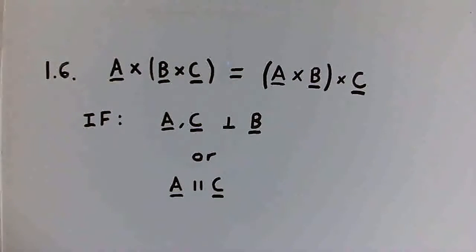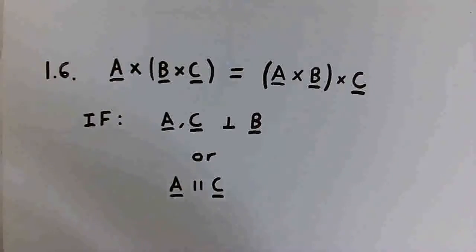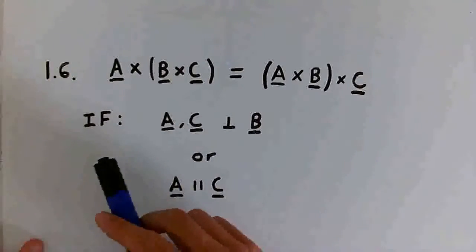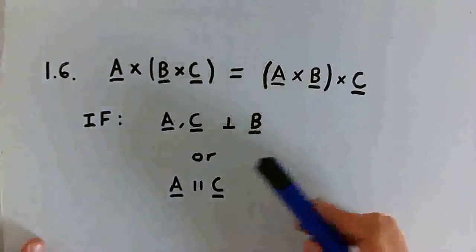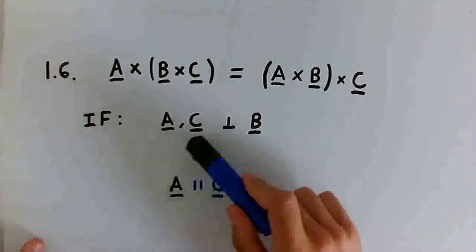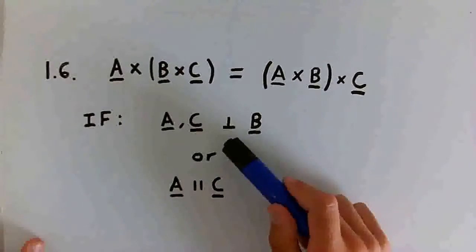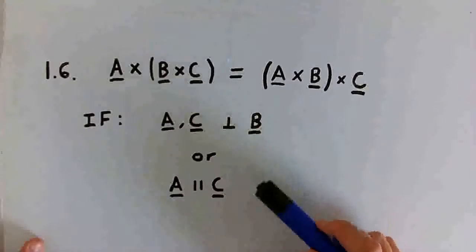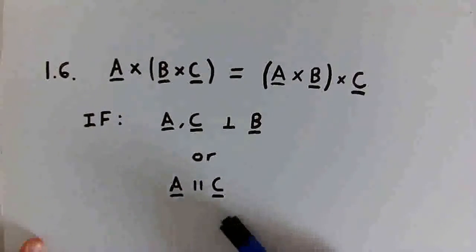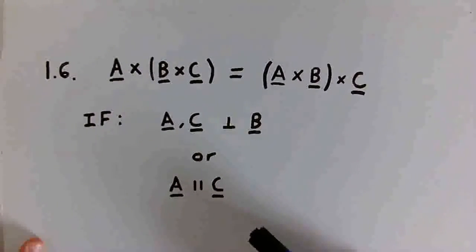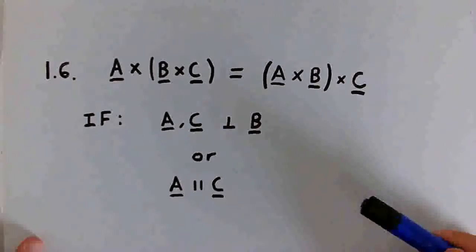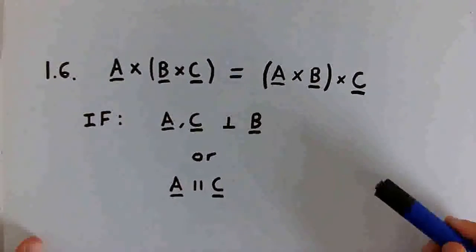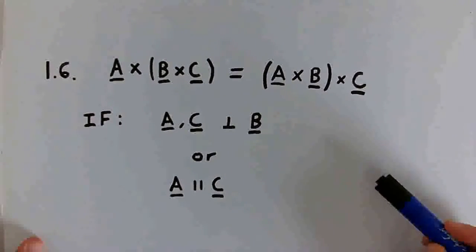We've now finished both parts of problem 1.6 and found the conditions under which A cross (B cross C) equals (A cross B) cross C. Those conditions are: if both vectors A and C are perpendicular to B, or if vectors A and C are parallel to each other. Thanks for watching the video, and subscribe if you want to watch more videos like this one.